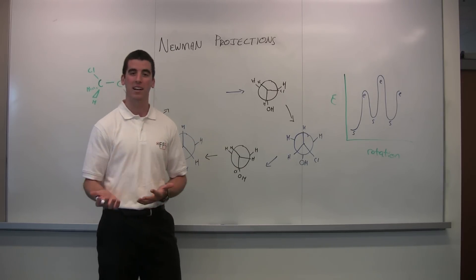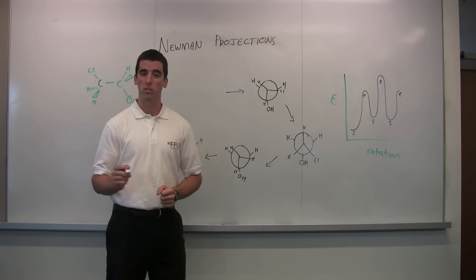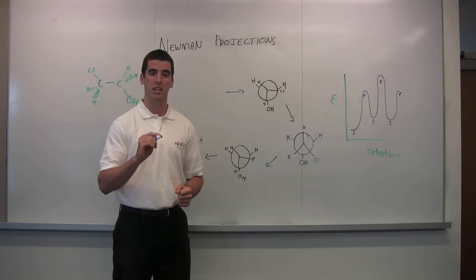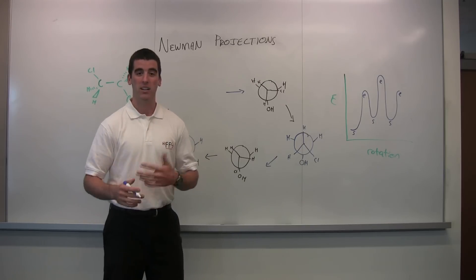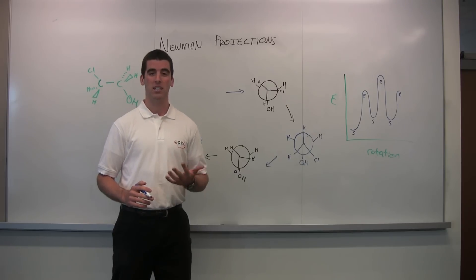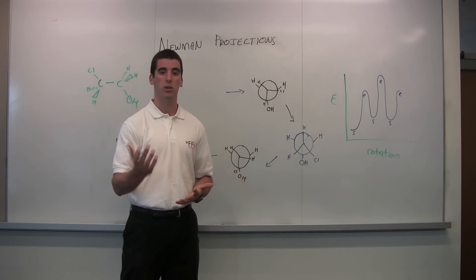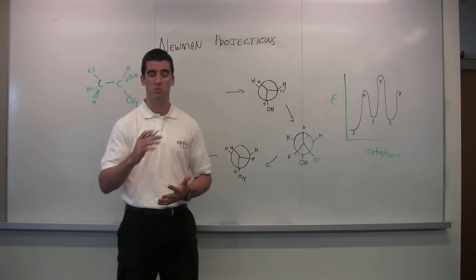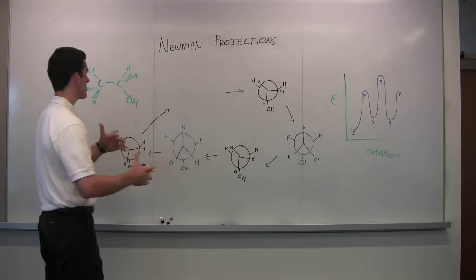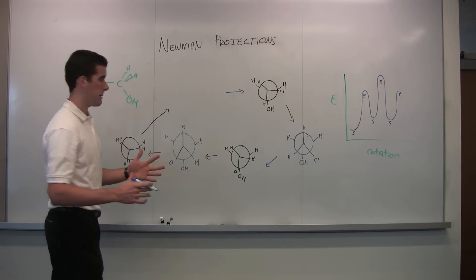Newman projections analyze the conformational differences in a molecule, and they do that two ways. One, they look at a bond rotating relative to another — one bond rotating at a time. Two, they look at 3D configurations by projecting a two-dimensional bond and then looking at the relative locations of atoms and groups attached around that bond. So let's look at an example to visualize how we go from a structure to drawing out the Newman projection of it.